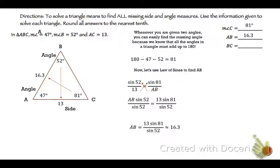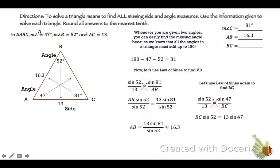Now we're going to use law of sines again to solve for BC. That's going to be sin 52 over 13 equals sin 47 over BC. Cross-multiply. Get BC sin 52 equals 13 sin 47. Divide by the sine of 52.